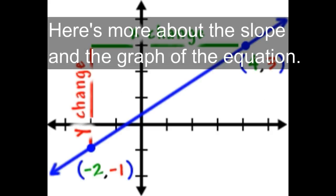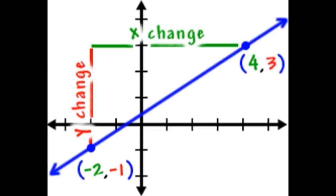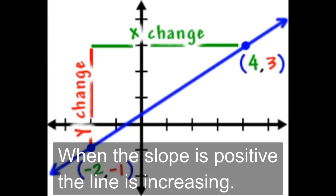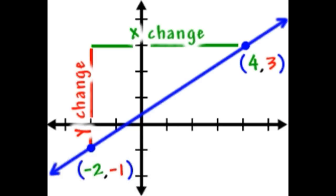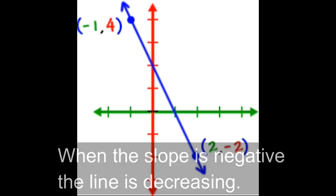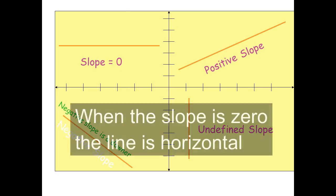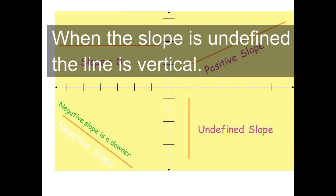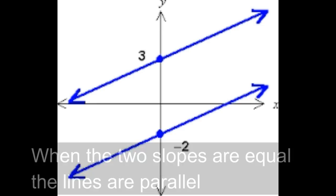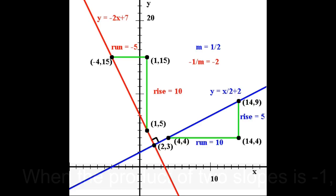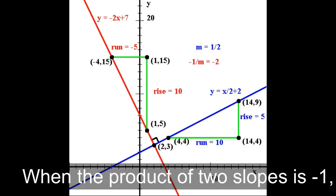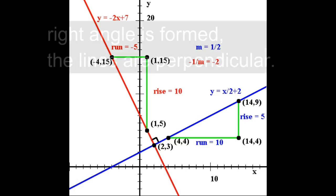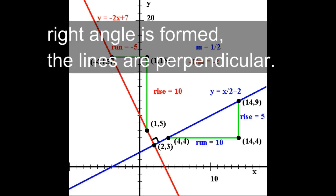Here's more about the slope and the type of the equation. When the slope is positive, the line is increasing. When the slope is negative, the line is decreasing. When the slope is zero, the line is horizontal. When the slope is undefined, the line is vertical. When the two slopes are equal, the lines are parallel. When the product of two slopes is negative one, a right angle is formed — the lines are perpendicular.